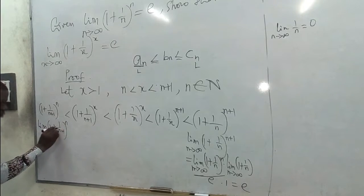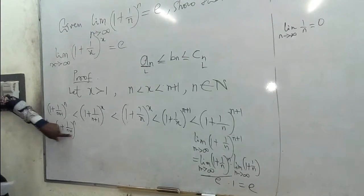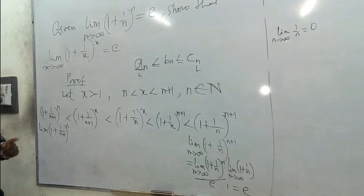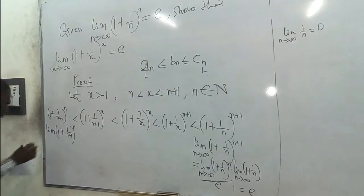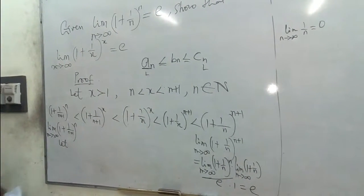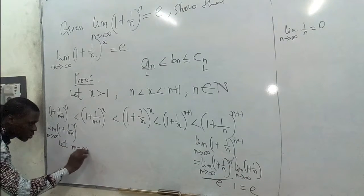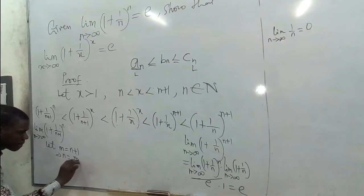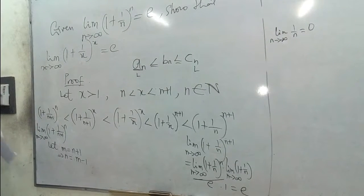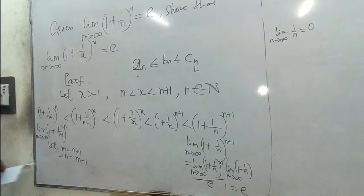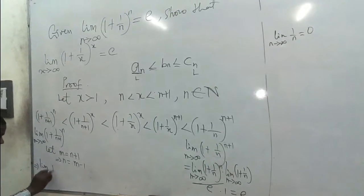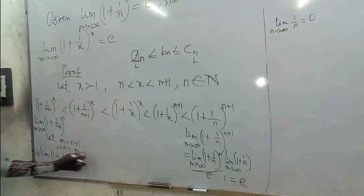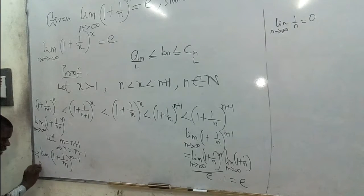Now we need to find the limit of (1 + 1/(n+1))^n as n approaches infinity. The difficulty is comparing this with the given expression where we have (1 + 1/n)^n equal to e. What we can do is let m equal n plus 1, so n equals m minus 1. Any place we see n, we write m minus 1. So the expression becomes the limit of (1 + 1/m)^(m-1) as m approaches infinity.